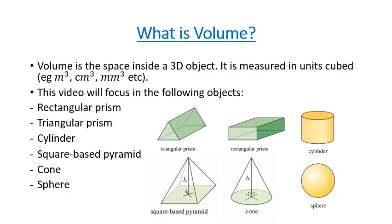This video tutorial looks at the mathematical strand of measurement, and more specifically we're going to focus on our understanding of volume. Volume is the space inside a 3D object, and it's measured in units cubed. If the side lengths are in metres, the volume would be in metres cubed. If they're in centimetres, the volume would be centimetres cubed, and the same applies for millimetres.